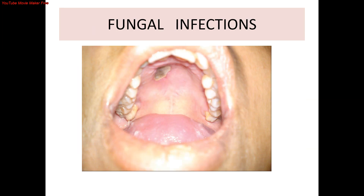Fungal infections are not common in the oral cavity in a reasonably healthy individual. Some oral ulceration is seen in mucormycosis, as shown in this slide. The patient is usually medically compromised or immunocompromised. The fungus invades arteries causing thrombosis, ischemia, leading to necrosis and ulceration. These ulcers are deep and usually expose the underlying bone. They are chronic and large in size, so they are very characteristic and easy to identify.